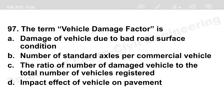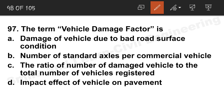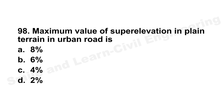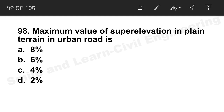Question 97: Vehicle damage factor is defined as the number of standard axles per commercial vehicle. Option B is the correct answer. Question 98: Maximum value of super elevation in a plain terrain urban road is 4%. Super elevation cannot be greater than 4% for plain terrain.